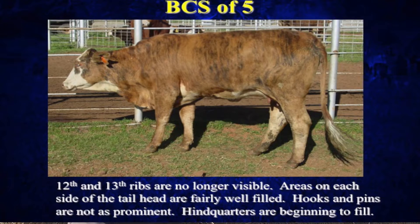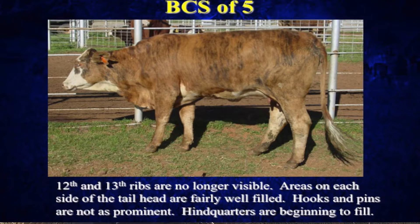At body condition score five, the 12th and 13th ribs — our last two ribs — are no longer visible. We've got a thin layer of fat all over the body of that cow, and she's just in average condition. She doesn't have any excess condition building up around her tail head or in her brisket — she's just smooth all over. This picture is of a fairly young female, so her hook bones and pin bones aren't going to be as prominent. As cows have additional calves, those bones will spread out and be more prominent. At first glance, more mature cows may look thinner than they are, but you have to imagine there's a covering over those hook bones and pin bones — just because they're sticking out doesn't mean they're skinny, as long as they've got some fat covering on them.